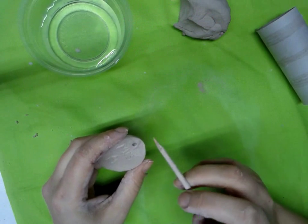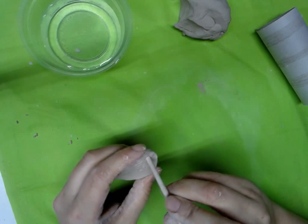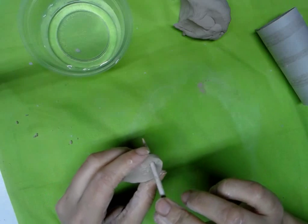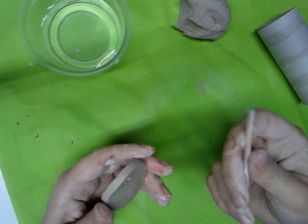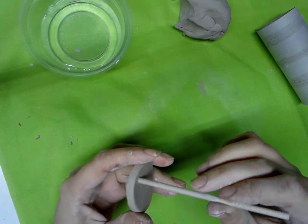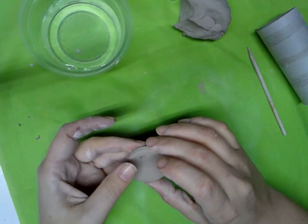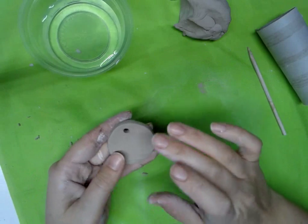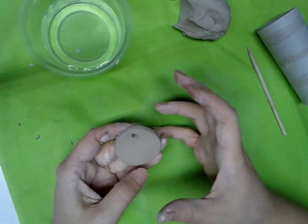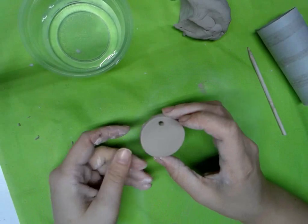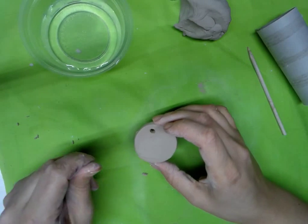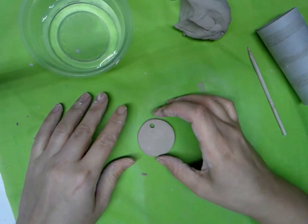Then I'm going to poke through one more time because when I smoothed it out, it messed up my hole. You want to make sure the hole is about the same size as the stick. When you put it in the kiln and fire it, it's going to shrink a little bit because the water comes out. We want to make sure that hole is plenty big enough so that when it shrinks we can still fit the string through there.